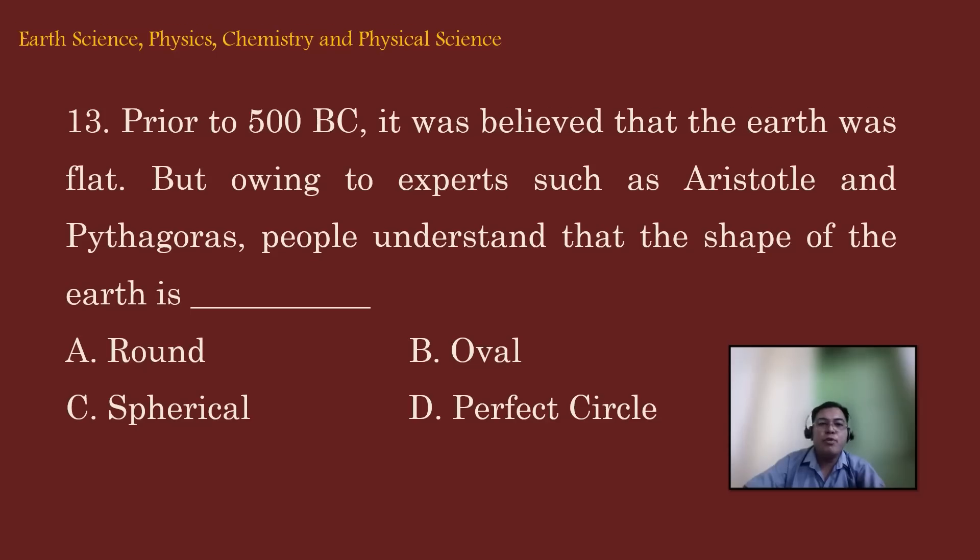Prior to 500 BC, it was believed that the earth was flat. But owing to experts such as Aristotle and Pythagoras, people understand that the shape of the earth is A. Round, B. Oval, C. Spherical, and D. Perfect circle.